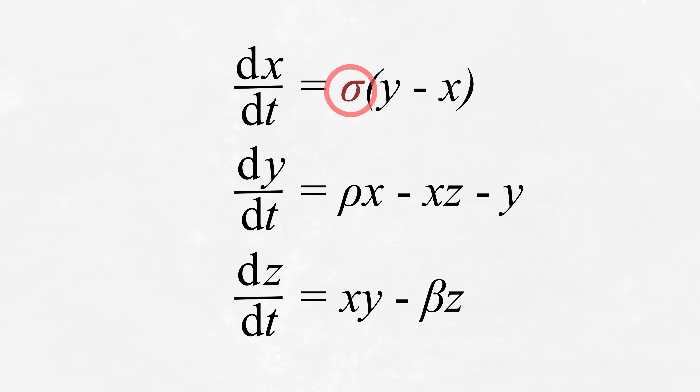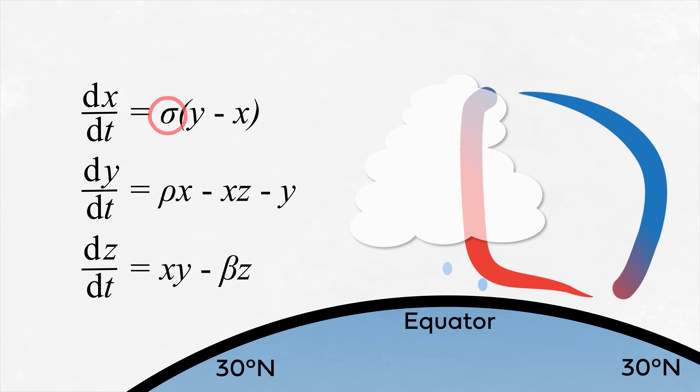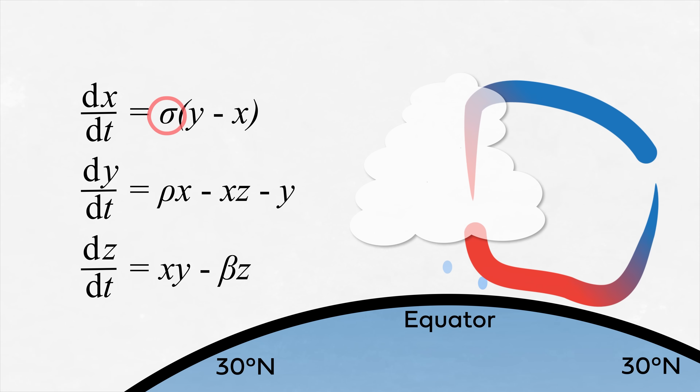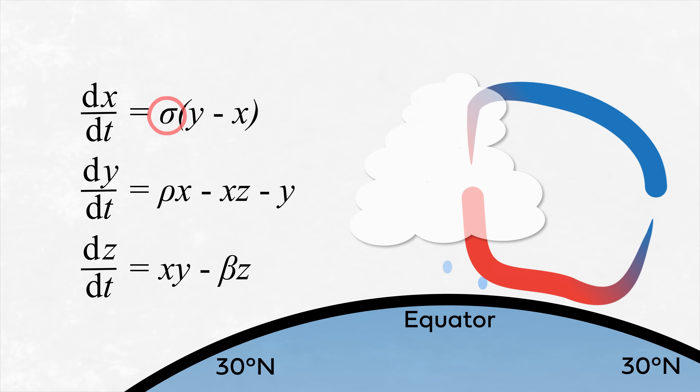The Rayleigh number is the interesting one. It's a measure of how hard you're forcing the system — in this case, how warm the ground is relative to the atmosphere. If heating from the ground is small, then you don't get convection, just vertical conduction. Beyond a certain point, you do start to see convection cells forming.